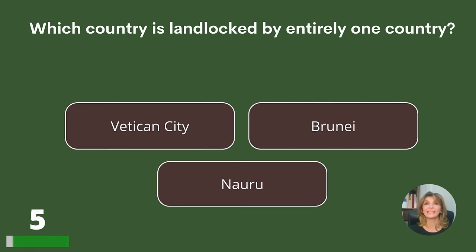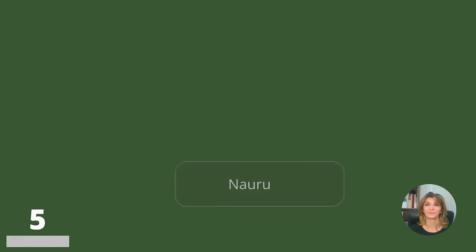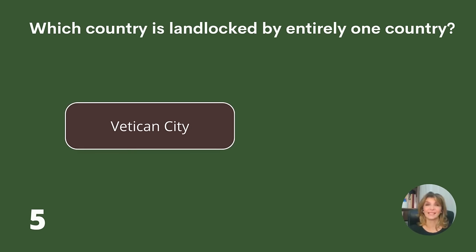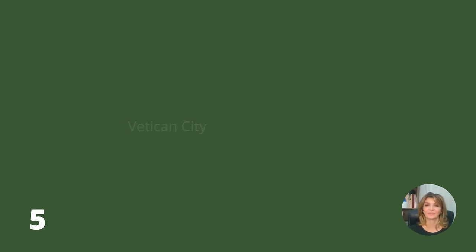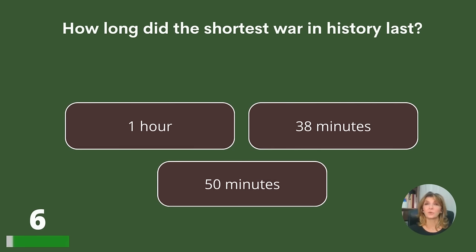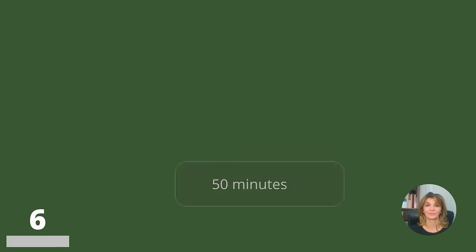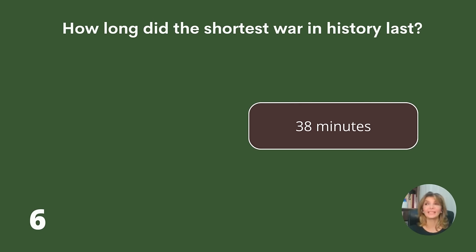Which country is landlocked by entirely one country? Vatican City, Brunei, or Nauru? Answer: Vatican City.